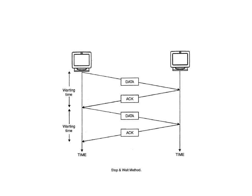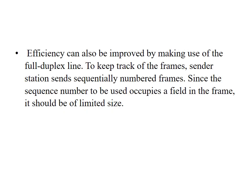This procedure continues until the sender sends all the data to the receiver. We can also achieve this through the full duplex method, where the sender and receiver can send data in both directions. The sender sends data and the receiver can immediately send an acknowledgement back. To keep track of frames, sender stations use sequence numbers, and since the sequence number occupies a field in a frame, it should be of limited size.